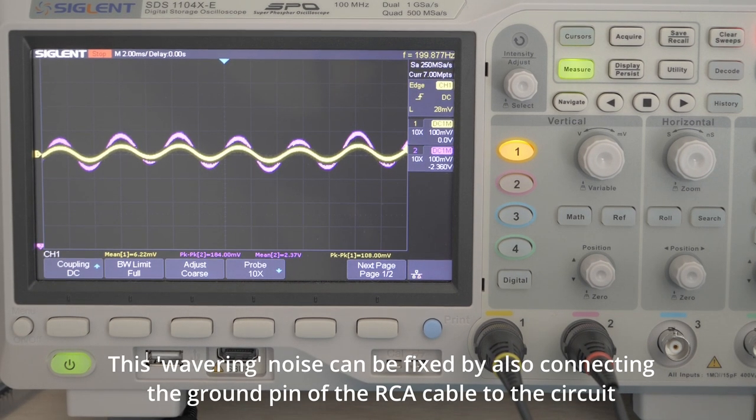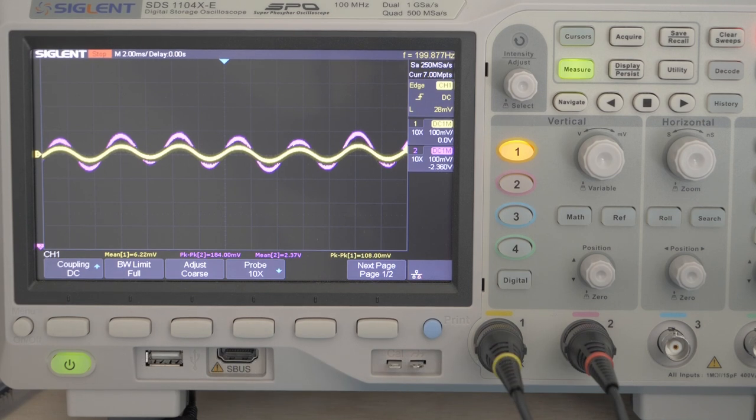So this is amplifying the input by right around two times. So we know that our circuit is working and amplifying the signal, which is great, but if you're being observant you may notice that the signal is only being amplified by about two times.